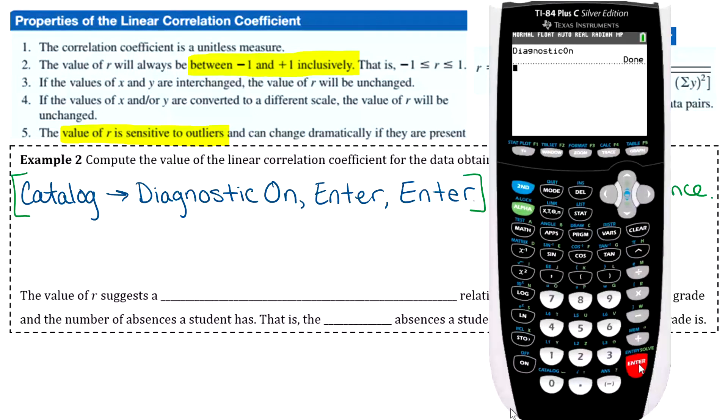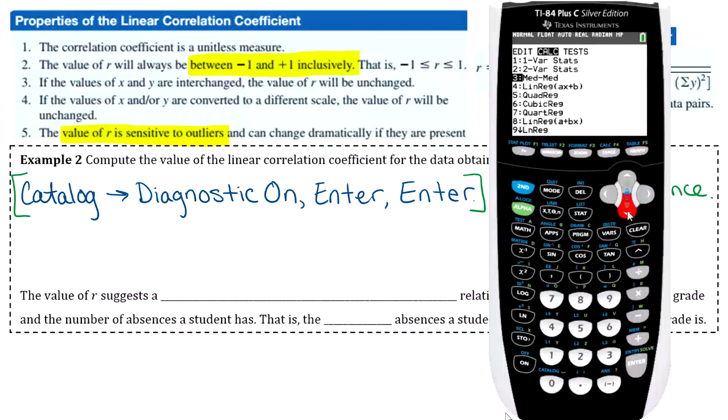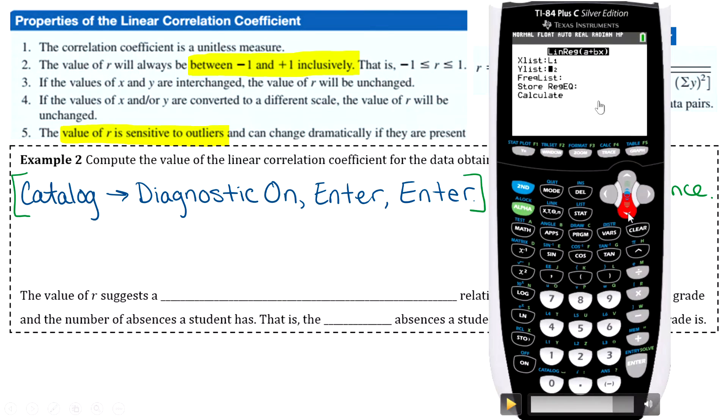So I'll show you on the calculator where to go first, and then I'll put it in words after that. So you want to go to stat, and then go over to calc. And then you're going to go to linreg a plus bx. So there's two of them in there. Number four is linear regression ax plus b. That is not the right one. Don't stop at four. We're never going to go to four. We want to go to eight, linear regression a plus bx. So that's a really common mistake for students to go to the wrong one, so just be careful with that. And then what comes up when you press that? Everything should be right by default. So L1 should be your x list, L2 your y. Frequency list should be blank. Don't worry about the regression equation. Just go to calculate.